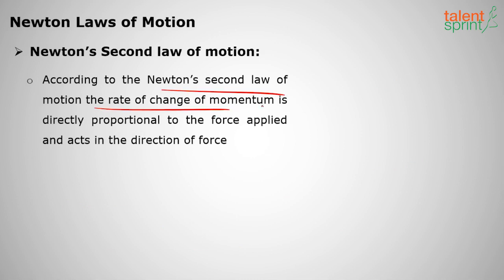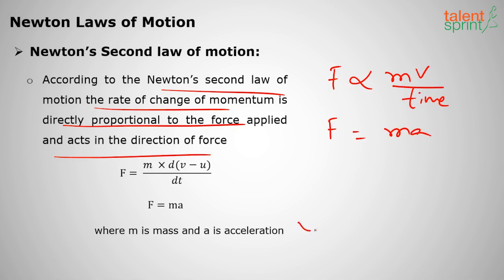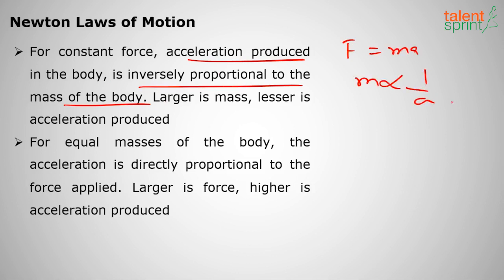Newton's second law of motion states that the rate of change of momentum is directly proportional to the force applied, and acts in the direction of the force. Since momentum is m×v, rate of change gives F ∝ m×a, leading to F = ma. For a constant force, acceleration is inversely proportional to mass — larger mass means lesser acceleration. For equal masses, acceleration is directly proportional to the force applied.